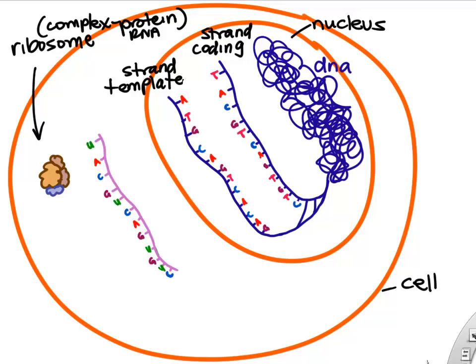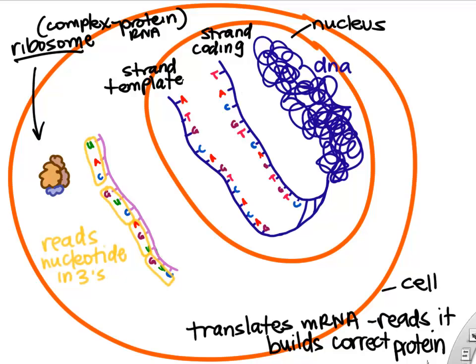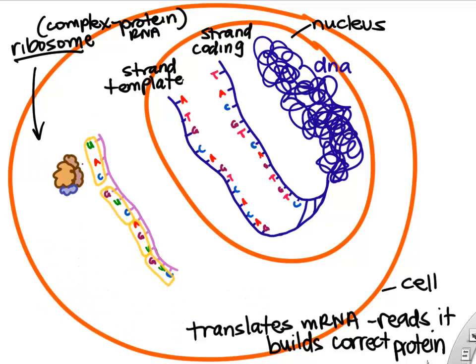For the next phase, we're going to translate — basically read that mRNA and build a protein. To do that, we need the ribosome, which is a complex of proteins and RNA. The ribosome's job is to read the mRNA and build the correct protein based on the sequence of the mRNA. Ribosomes read the mRNA nucleotides in groups of three — sometimes called codons. Each group of three nucleotides tells the ribosome to go get a specific amino acid, and by chaining amino acids together we're going to make a protein.